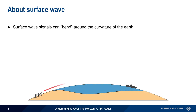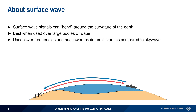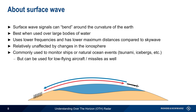The other type of propagation used in OTH radars is surface wave, in which signals bend around the curvature of the Earth. This kind of propagation is also called ground wave, but in OTH radars, the ground is usually a large body of water. Compared to skywave, surface wave requires use of lower frequencies and has lower maximum distances, but is also relatively unaffected by changes or variation in the ionosphere. Surface wave OTH radars are most often used to monitor ships or natural ocean events such as tsunamis or icebergs, but can also be used for detection of low-flying aircraft and missiles.